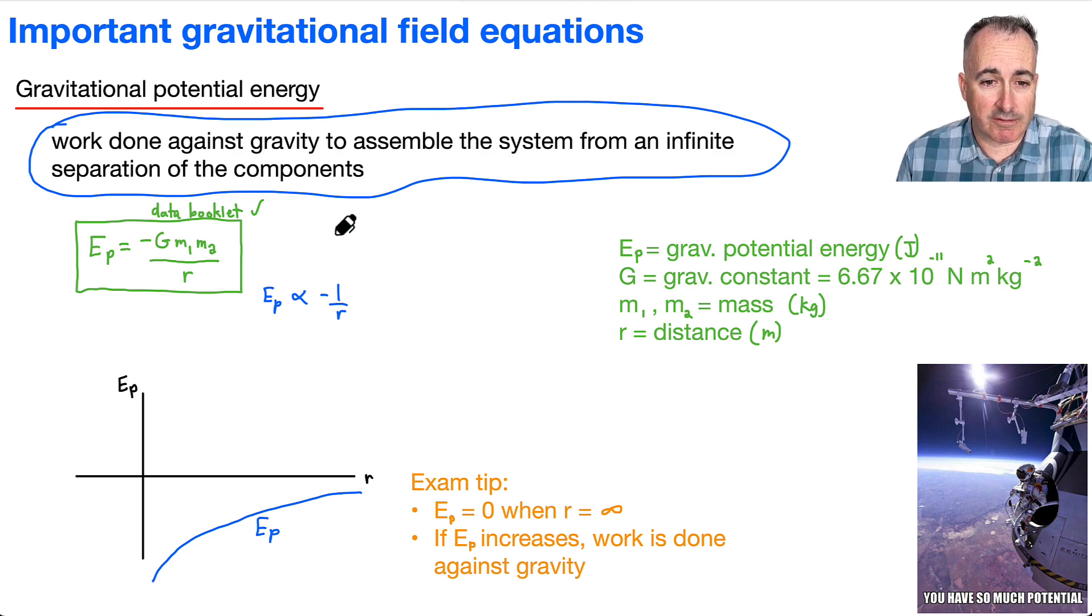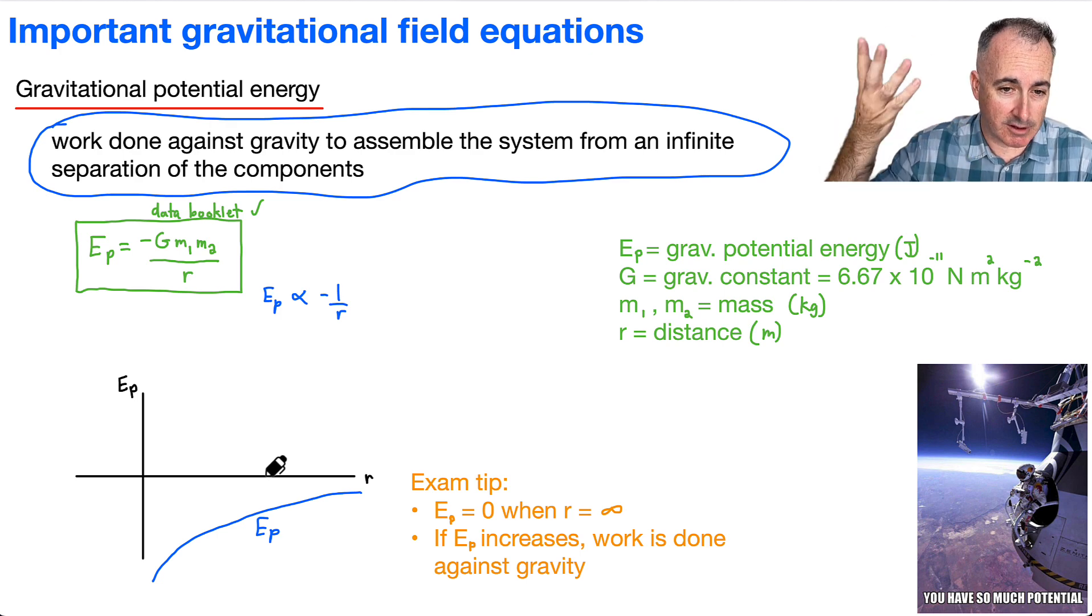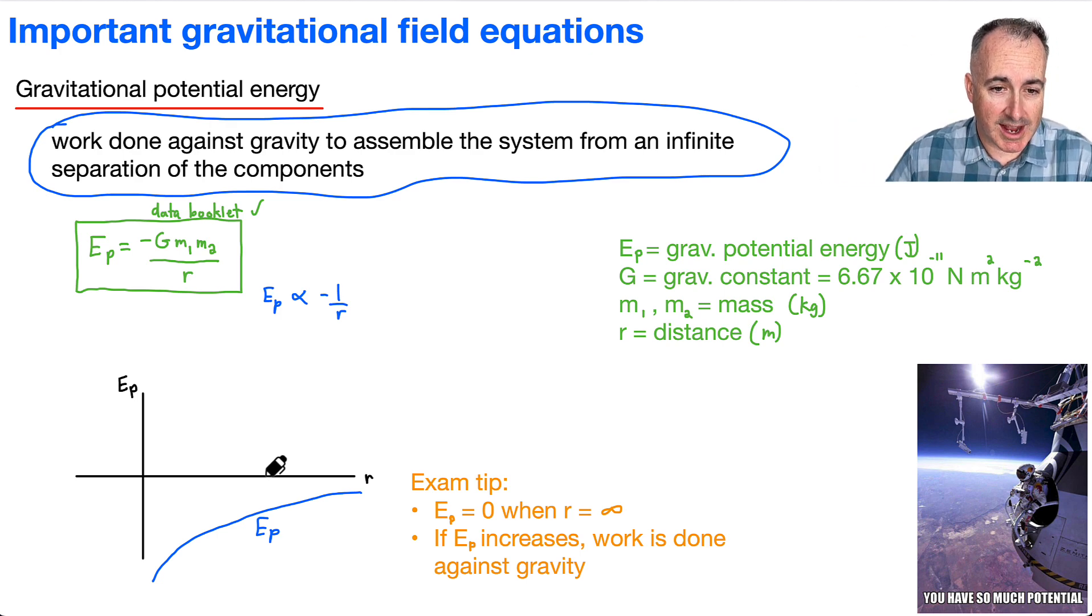So this right here is how we're going to define it. And remember, the gravitational potential energy is going to be 0 at infinity, which means anything to the left of 0 must therefore be negative. And of course, then as Ep increases, in other words, as we go up in Ep, then we have to go right. So if we go up, then we go right. And if we increase that, we say work is done against gravity. That's how we're going to define it.